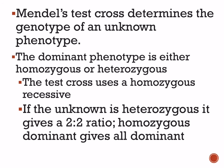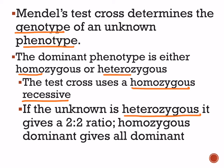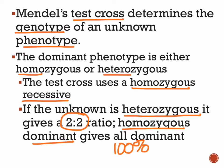Mendel's test cross of the heterozygous hybrid will determine the genotype of an unknown phenotype — you can do a back cross or back check. The dominant phenotype could be either homozygous or heterozygous, and you do the test cross to find out. It uses a homozygous recessive individual. If the unknown is heterozygous, you will see a 2 to 2 ratio in the offspring. However, if the individual is homozygous dominant, you get 100% dominant offspring. That's what we call a test cross.